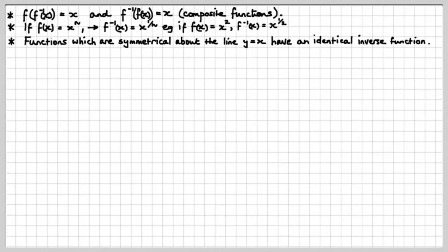Okay, now, another one. Functions which are symmetrical about the line y equals x have an identical inverse function. Now, what does that mean? Well, this one here, y equals x, that actually coincides with the line y equals x, of course, and so that's probably not a really good case to think about in terms of the inverse being the same as the original because they're right on that line anyway.